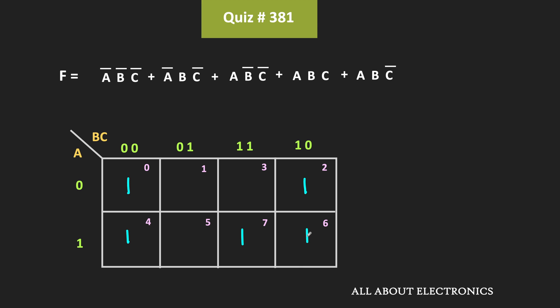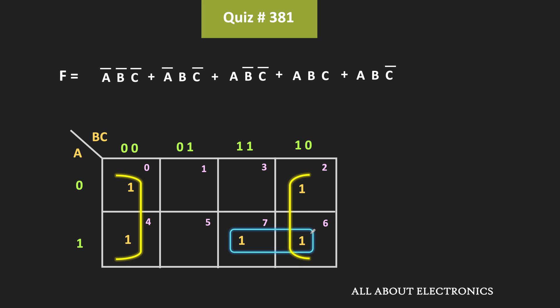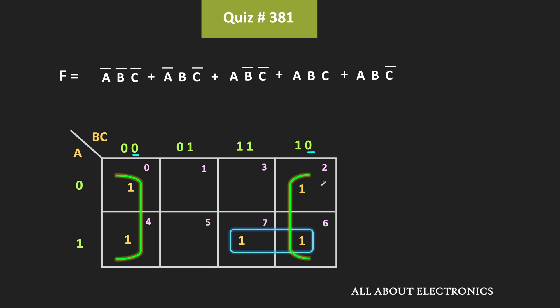Now let us try to minimize this expression. To minimize this expression, we will make groups of ones in powers of 2 or 4. Here we can make a group of four and a second group. For the first group, both variables a and b are changing while variable c remains fixed — that means this group corresponds to c̄. For the second group, variables a and b are not changing while c is changing — that means this group corresponds to a·b. So overall, the minimized expression is equal to c̄ + ab.